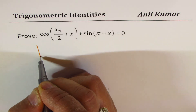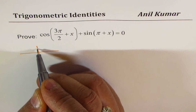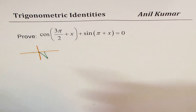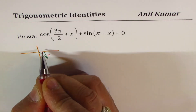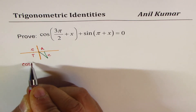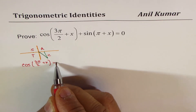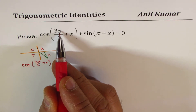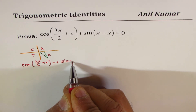Let's see what cos(3π/2 + x) is. 3π/2 means: 1·π/2, 2·π/2, 3·π/2 — you are in quadrant 4. In quadrant 4, cosine is positive. Also, whenever you work with 3π/2, you get the complementary function, which is sine. So cos(3π/2 + x) = sin(x).